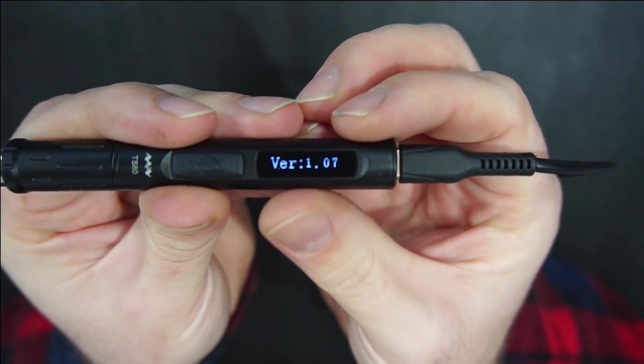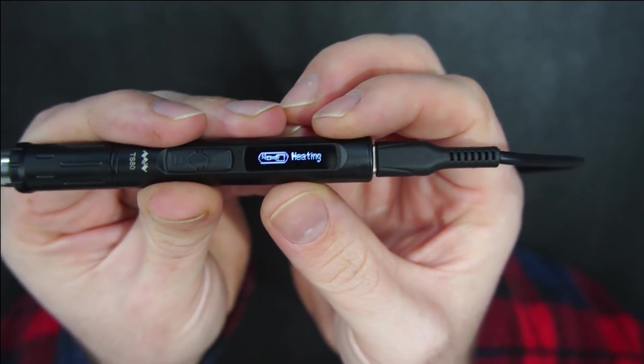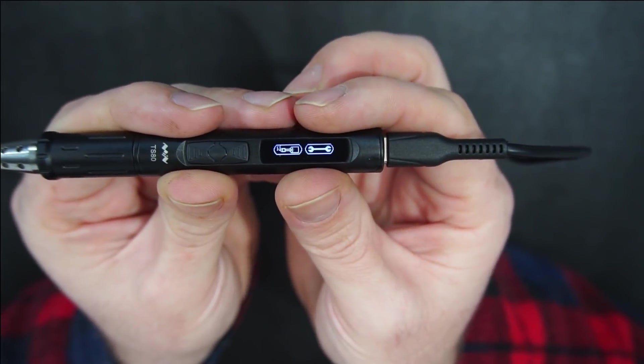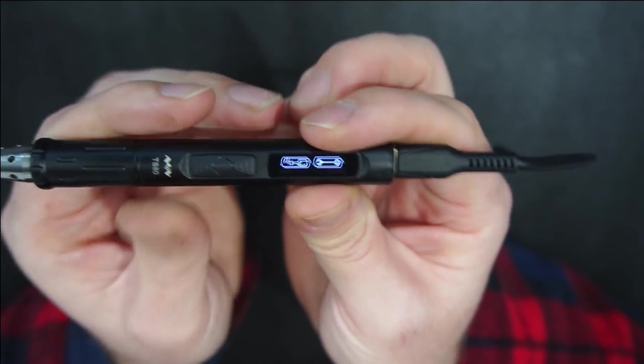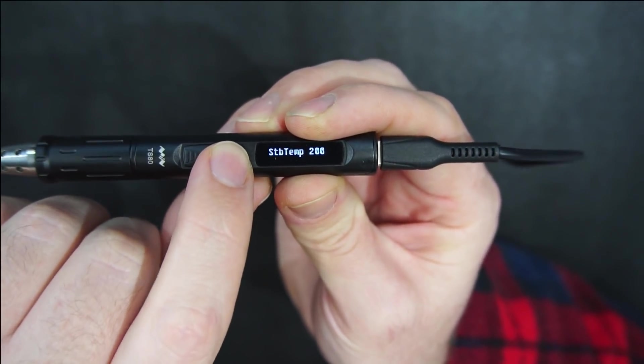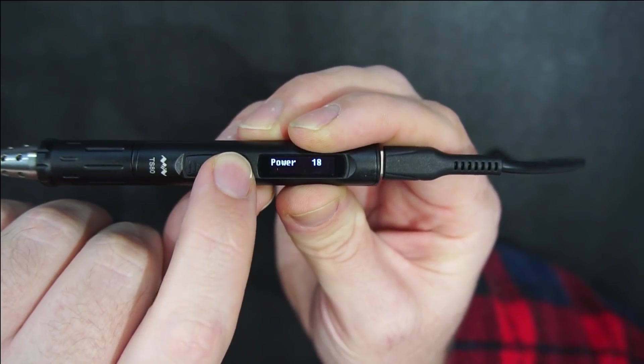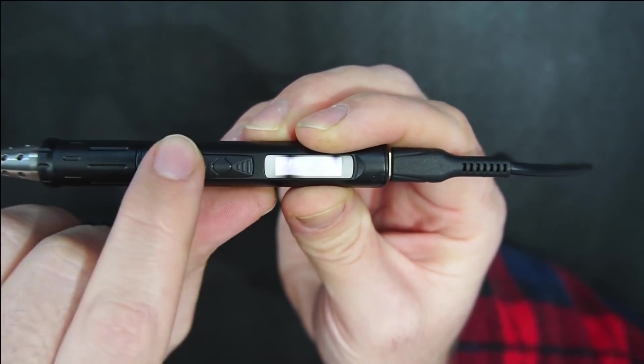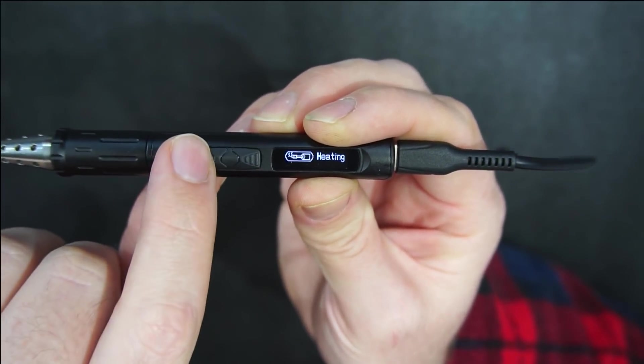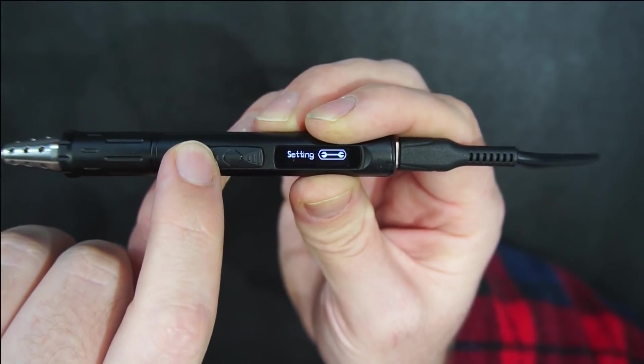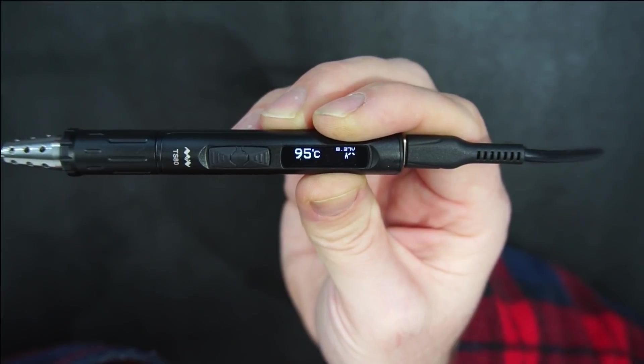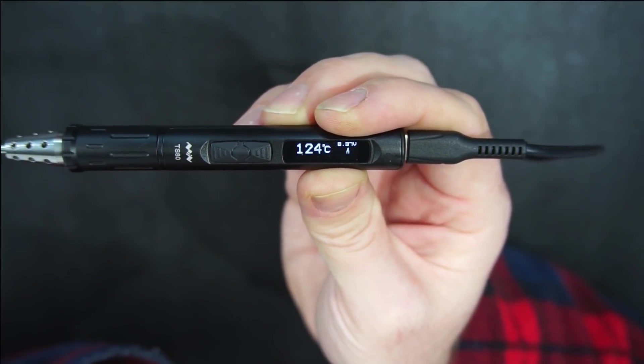When we first plug it in we get the firmware version that it's running and we can change this. It's in a standby mode. If we short press the button closest to the LCD we can cycle through all the settings. And if we long press we go out of settings. And if we short press the button closest to the soldering tip we immediately go into heating mode. The temperature is climbing pretty rapidly.